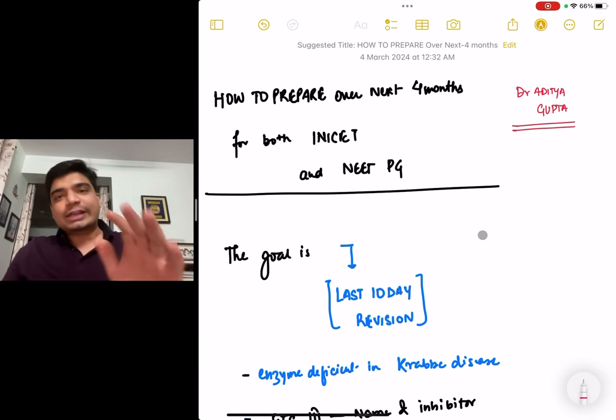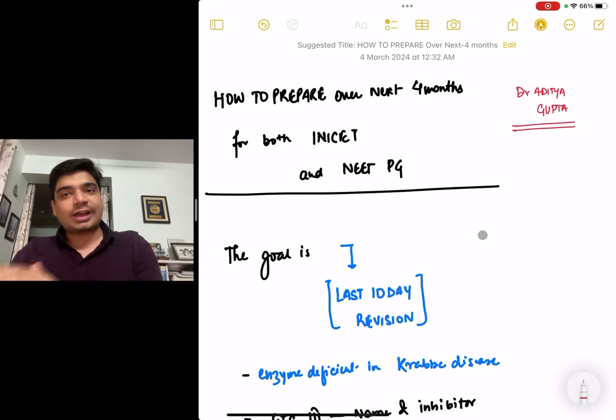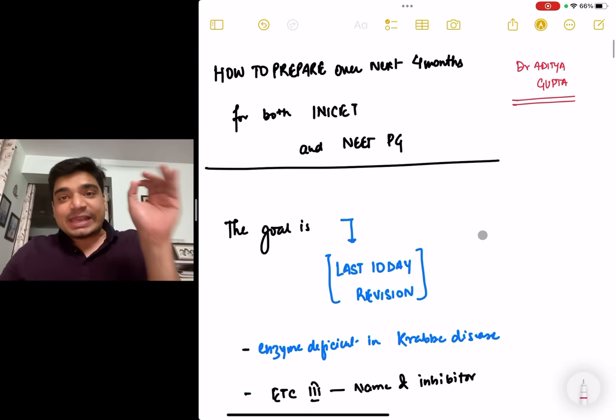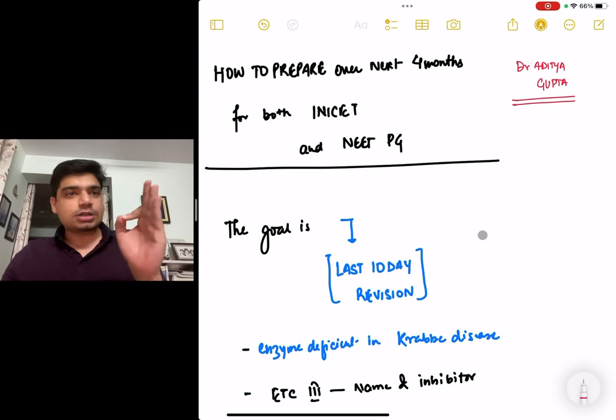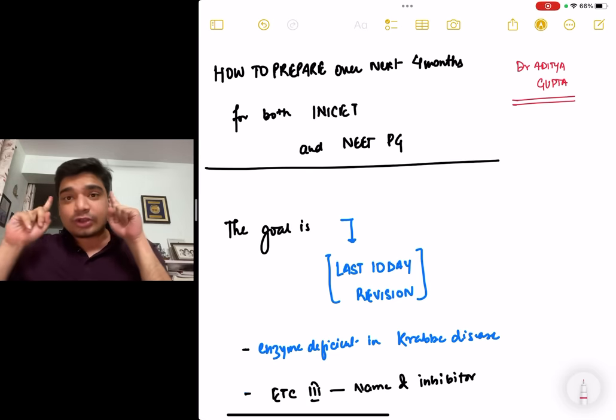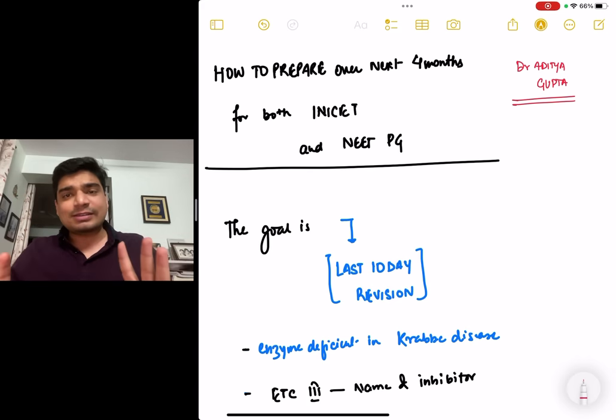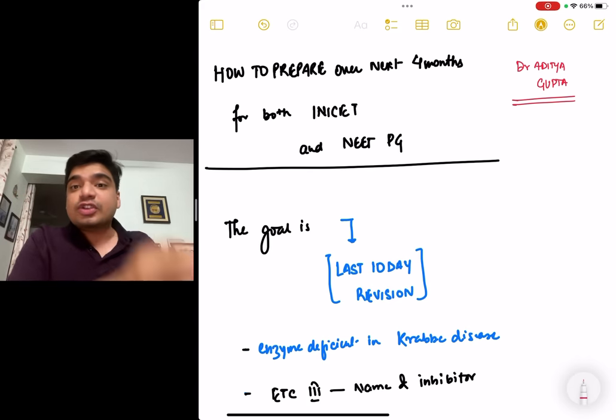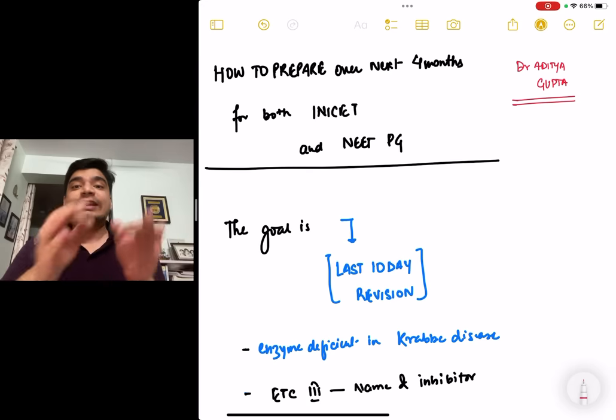If you would have watched any topper interview, this was a strategy which I introduced 2 years ago with my best friend Rishabh. The main thing that determines whether you are a topper, a top 100 or a 1000 rank versus someone who is getting a 10,000 rank is not the difference in knowledge. The difference is in revision. The difference is in the last 10-day revision.